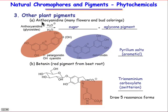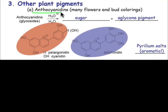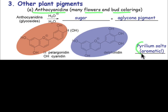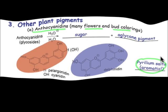The anthocyanidins are the pigments that are responsible for the colors that we see in many flowers and budding plants. They have the structures shown here, and these are known as pyrylium salts — we'll learn about pyrylium salts and other aromatic systems a little bit later on in the semester.